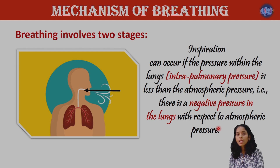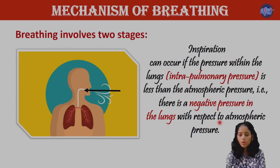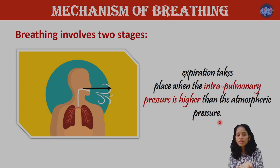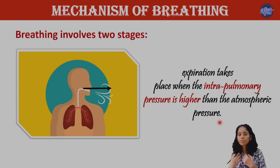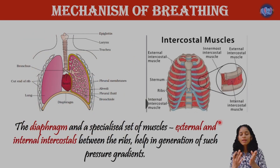The pressure inside the lungs is negative with respect to the atmospheric pressure. When the atmospheric pressure is higher than the pressure inside the lungs, air flows in. That is why a pressure gradient is created.